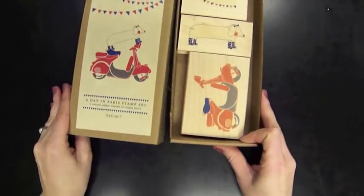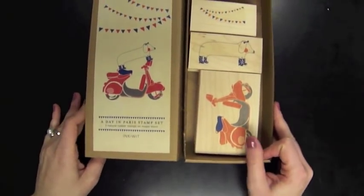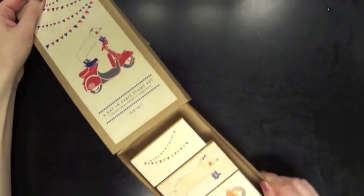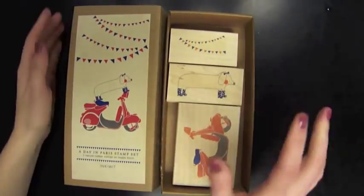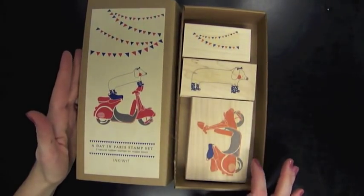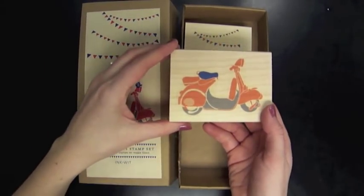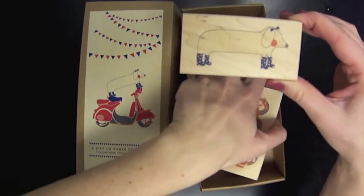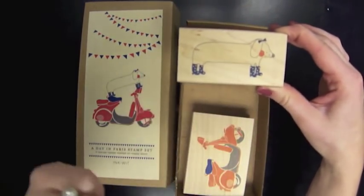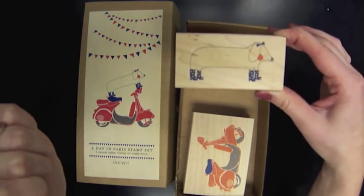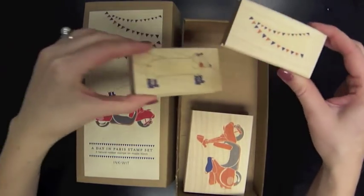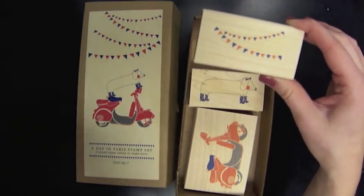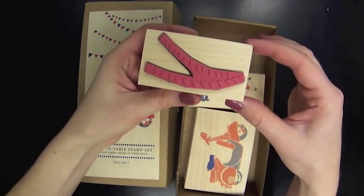A couple other stamp sets. These are brand new to the store and they're really fun. They're by Ink and Wit and they come in this cute little kind of match box. You just slide out the box here and you get a few in each. This one is called a Day in Paris. It comes with this cute little scooter, a little dog with rain boots and polka dots. Made of rubber material. So that was a Day in Paris.